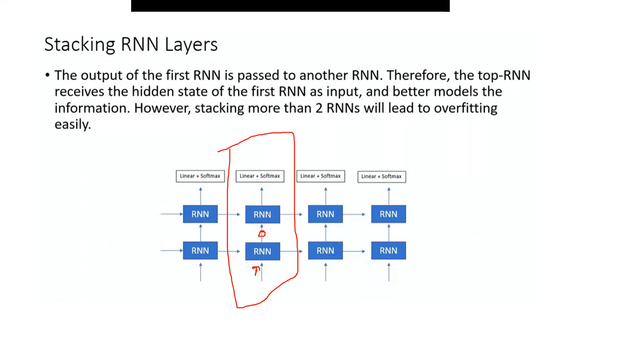And then, we will be passing the output of this with a linear or a softmax function. Therefore, the top RNN receives the hidden state of the first RNN as input and better models the information.